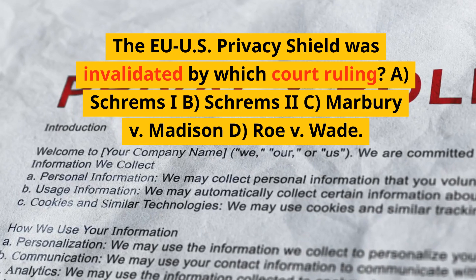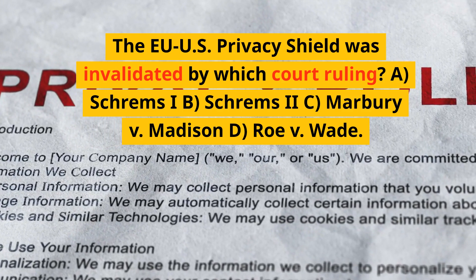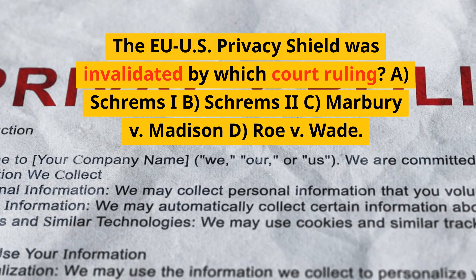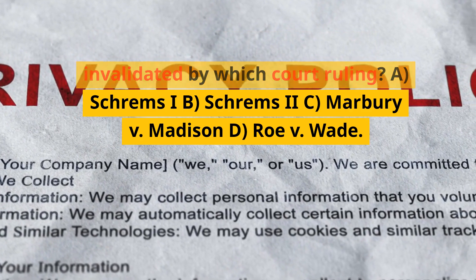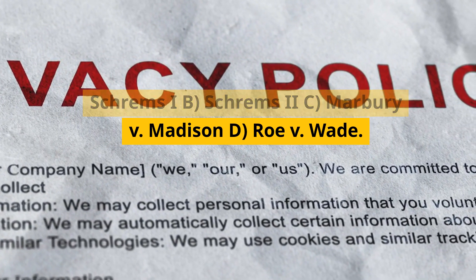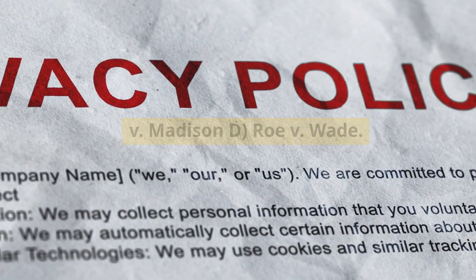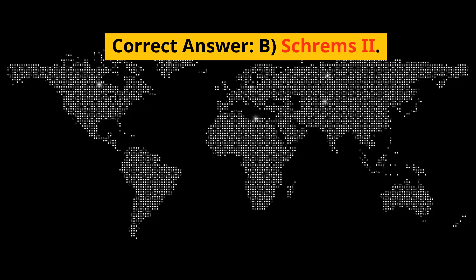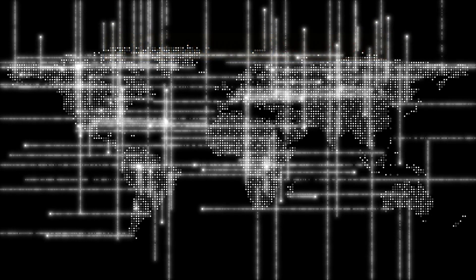The EU-US Privacy Shield was invalidated by which court ruling? A. Schrems I. B. Schrems II. C. Marbury vs. Madison. D. Roe vs. Wade. Correct answer: B. Schrems II.